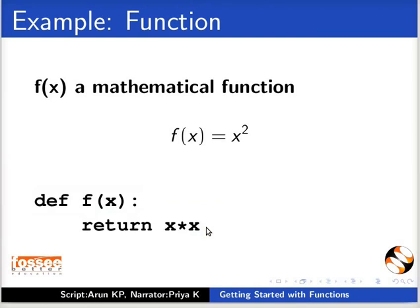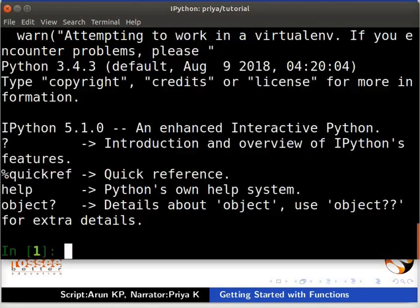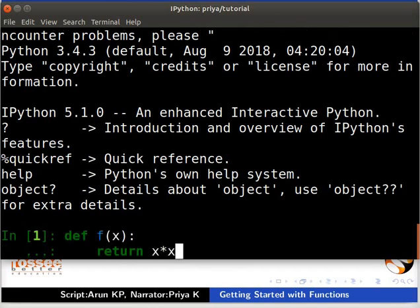Let us start IPython. Open the terminal. Type IPython 3 and press ENTER. From here onwards, remember to press the ENTER key after typing every command on the terminal. Type def f inside brackets x colon return x asterisk x, and press the ENTER key two times.